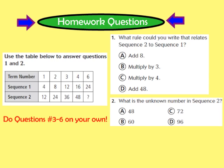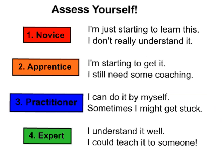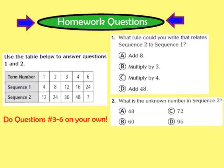Your homework for tonight is to complete question number 1 and question number 2, as well as numbers 3 through 6, found in your GoMath workbook on page 192. Don't forget, somewhere on your homework page, I want you to assess yourself. Do you feel like you're a 1 (novice), 2 (apprentice), 3 (practitioner), or 4 (expert)? We hope you have a great evening and look forward to seeing you in class tomorrow.